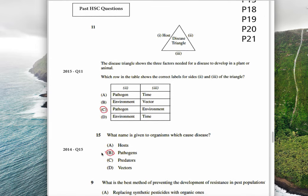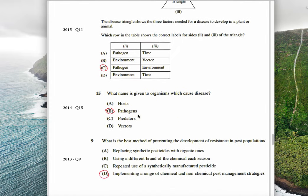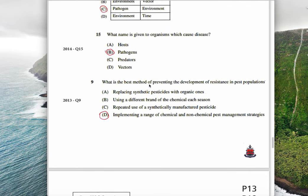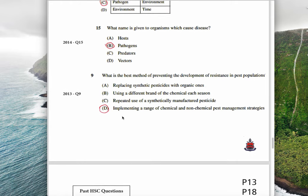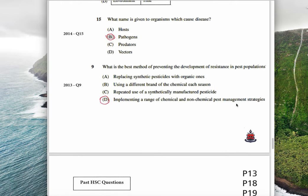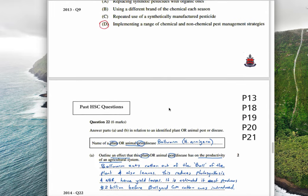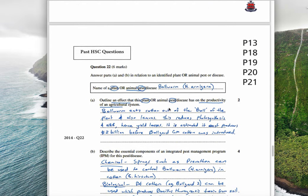Moving on, we have a disease triangle here. We have host, pathogen, and environment are the three things on the triangle. What is the name given to organisms which cause disease? It is pathogen. And what is the best method for preventing the development of resistance? It's implementing a range of chemical and non-chemical strategies. That is the only one that is IPM. That one is one method, that one is one method, and that one is one method.